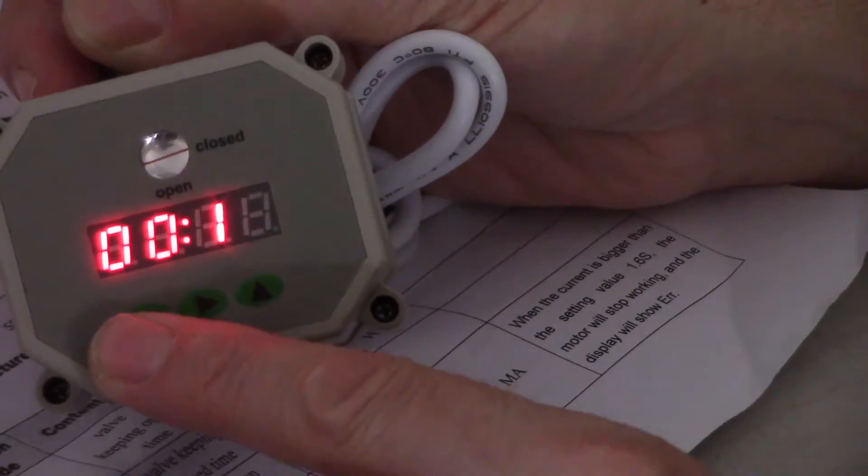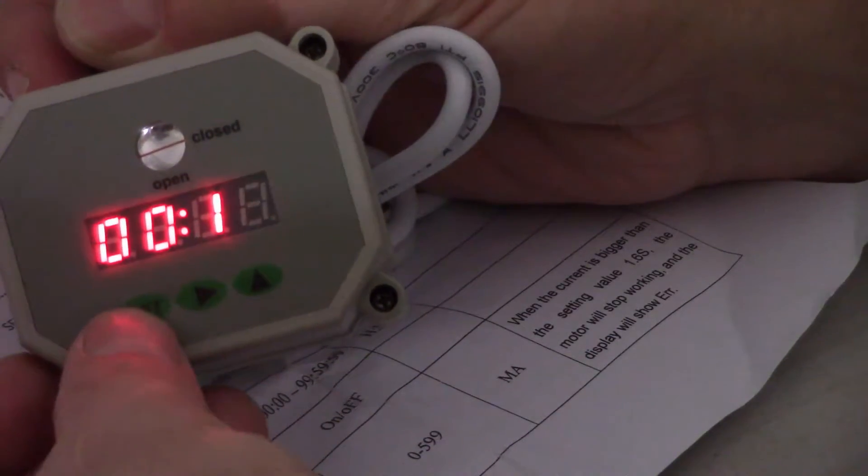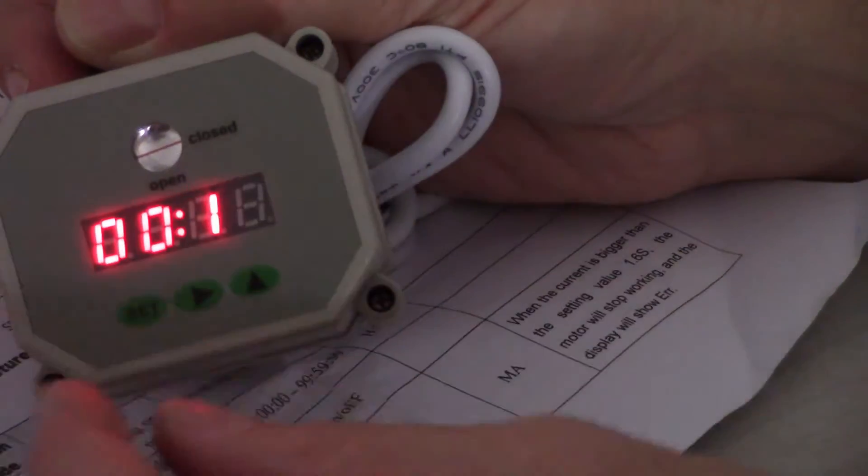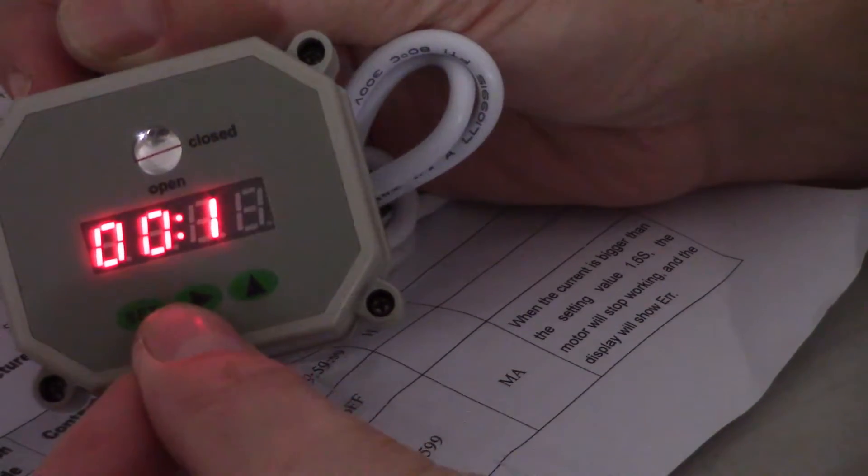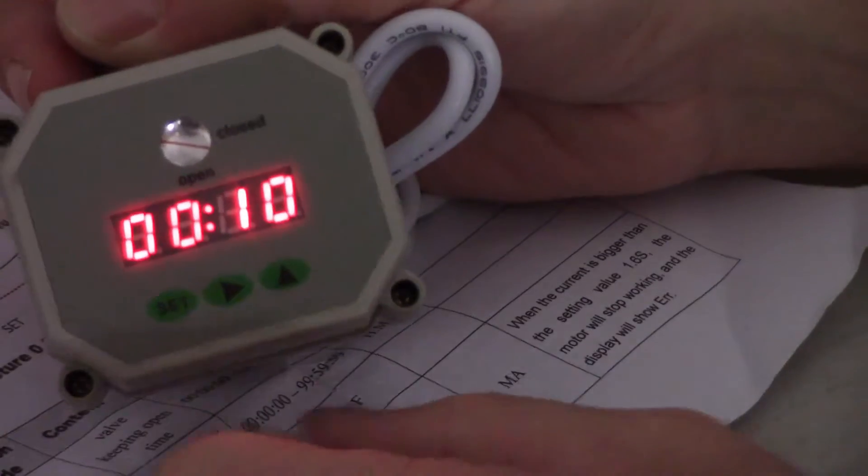When you turn it on you're going to press the set button. It'll say T and on, and then you're going to press the right arrow and skip all the way over and program it to a number of seconds.